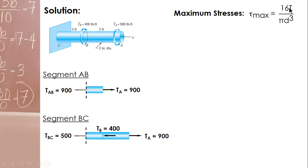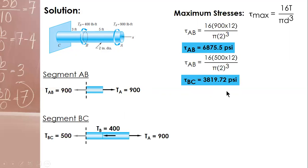For maximum stresses, the formula is 16T over pi d cubed. Direct substitution, diameter. 16 times 900, this is pounds feet, so you convert the feet, multiplying by 12 to get inches. 900 pounds feet, conversion factor, pi diameter 2 cubed. This is your stress for AB. For BC, 16 times 500, conversion factor from feet to inches, over pi d cubed. And this is BC. These are the maximum stresses for AB and BC.